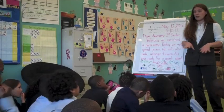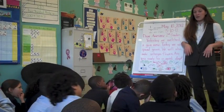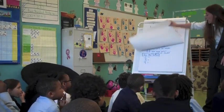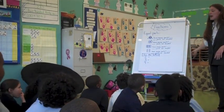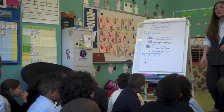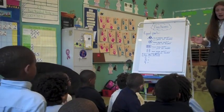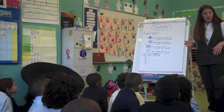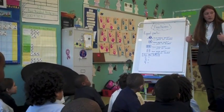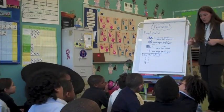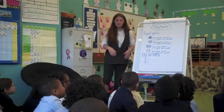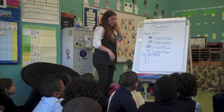Fractions — what we're doing in our new unit — has everything to do with equal parts. If an object isn't broken into equal parts, we can't do a fraction with it. So today we're going to look at shapes and see if they have equal parts. The first thing you do before anything else with fractions is to find out if it has equal parts.